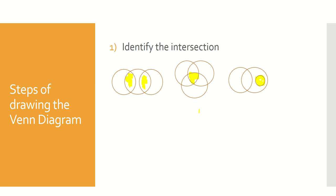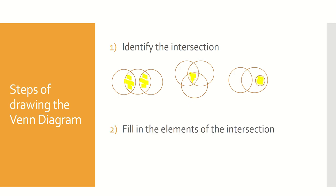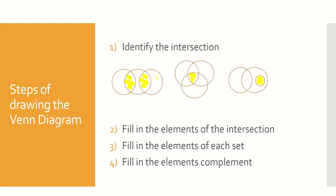The second step of drawing the Venn diagram, after identifying the intersection, is to fill in the elements of the intersection — meaning you fill everything in the highlighted area. The third step is to fill in the elements of each set in the white space. The last step is to fill in the elements of the complement, which is the area surrounding the sets.